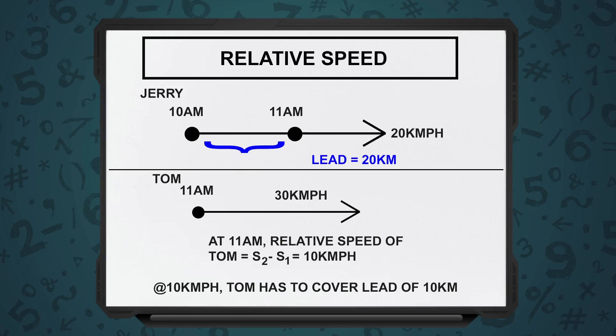So now, what are the pieces of information we have? Jerry starts at 10 and has a speed of 20 km per hour. Tom starts the chase at 11, so there's a lag of 1 hour. Tom is chasing Jerry, which means he's moving in the same direction as Jerry, at a speed of 30 km per hour. So Tom is faster, Jerry is slower.